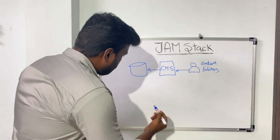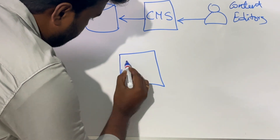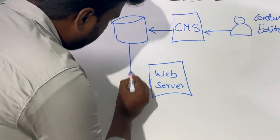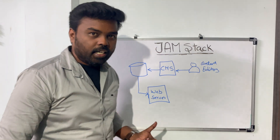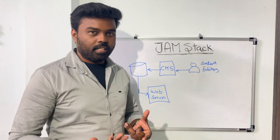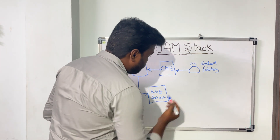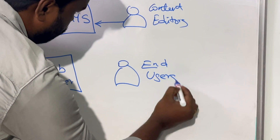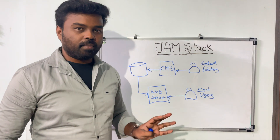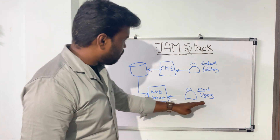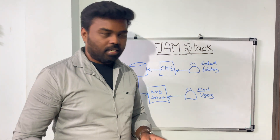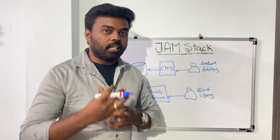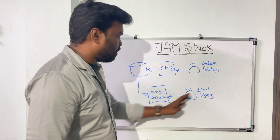We need to have a web server — a web application. This web server fetches the data from the database, constructs the HTML pages dynamically on the fly, and then serves those pages to the end users. So when end users hit a URL in your application, the request goes to the web server, the web server talks to the data store, fetches the data, constructs the HTML pages on the fly, and serves it to the end users.